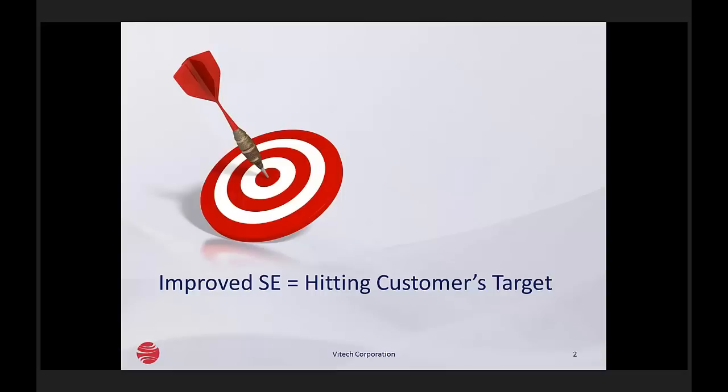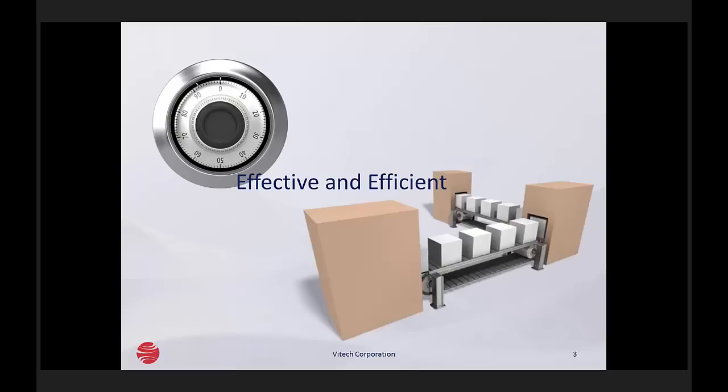How are we able to deliver what the customer wants when the customer needs it? This is our ultimate standard — our raison d'etre, or our reason for being. Not only do we need to be able to hit the customer's target, but we need to be both effective and efficient in doing it. To be effective, we have to be sure that we're doing the right things. And to be efficient, we have to make sure that we're doing things right. Ultimately, this has always been the test of systems engineering.